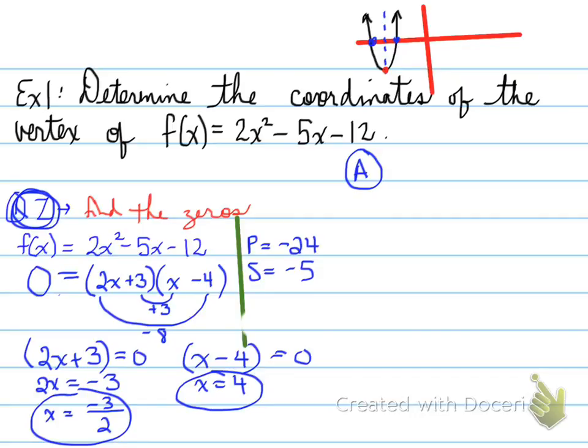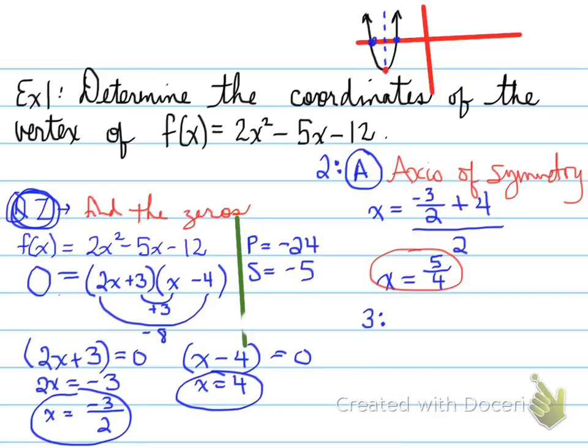Our second step is A. A stands for axis of symmetry, and that's step number 2. To find the axis of symmetry, if you remember earlier when we talked about it, to find the middle between the zeros, you have to add them up and divide by 2 to find the middle. So we're going to take the zeros, add them, and divide by 2. The answer we get here is x equals 5 over 4. We've now found the axis of symmetry.